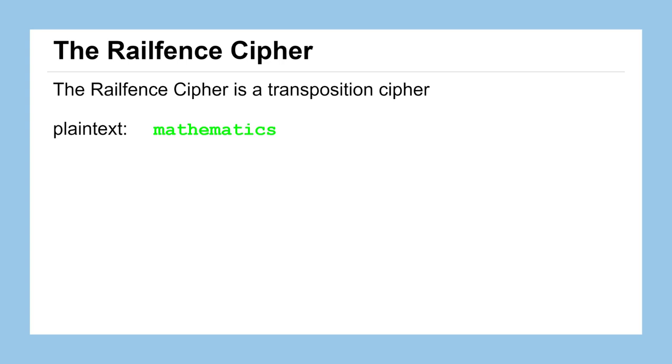We'll begin with this plaintext word mathematics and begin our railfence cipher. We take each letter one at a time and we'll start by dividing that into two rails or rows in order to reorganize the letters. So we'll start with the letter m on our top row and we'll write the letter a down below into the second row and then we'll come back up with t to the top row, down to the second row for the next letter h, and we continue to alternate until we spell out our entire plaintext.